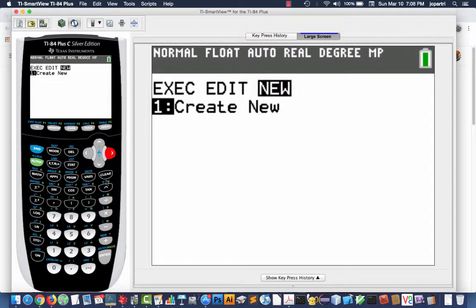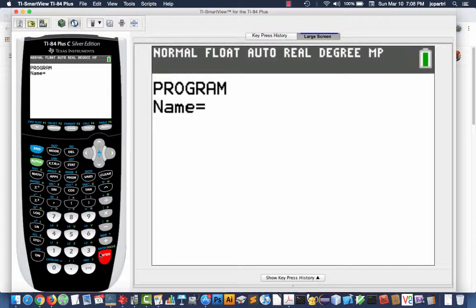Scroll over to New. We're going to create a new program. Notice the cursor is blinking in A. That means it's in alphanumeric mode, which means it's ready to receive letters. And if you notice above your keys, you have letters. And so I'm going to name this program NM3. To get the 3, I have to leave alphanumeric mode, so I hit the alpha key, and notice the A, the blinking A, is now gone. So I type 3. So now I'm ready for program 3.